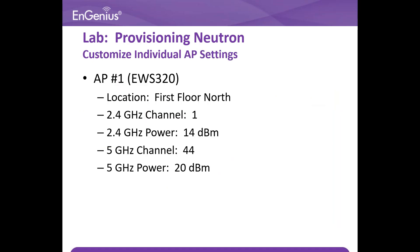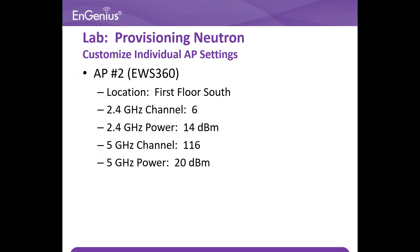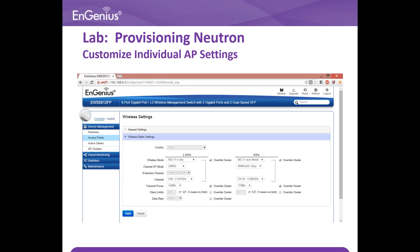Now make changes to AP one which is EWS 320 with the following settings as shown. This is done using the customization of individual AP settings. Now make the changes for the second AP which is the EWS 360 with the settings shown in the slide. By selecting the individual AP, you can customize the individual settings by using the override.